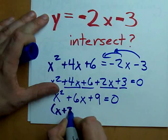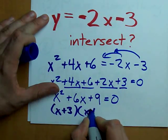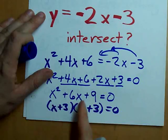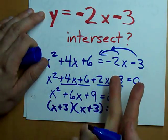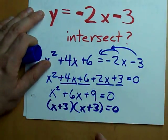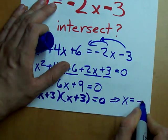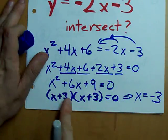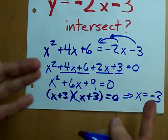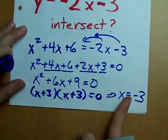x plus 3, x plus 3 equals 0. If you don't know how I just did that, watch my videos about factoring. And from that, we find x is negative 3. Negative 3 or negative 3. It's negative 3. I only got one answer.